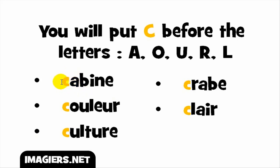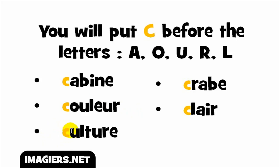The first example: C plus A gives you the /k/ sound. The full word is cabine — cabine. Second example: the vowel O combined with U gives you the sound OU, and with C in front it gives you /k/ — cool, cooler. Third example: OU combined with C gives you /k/ — culture, culture.